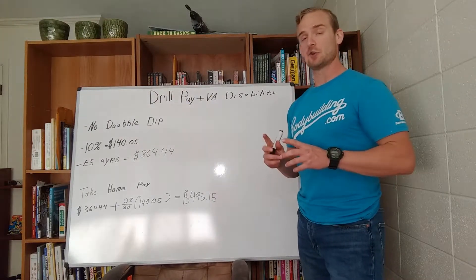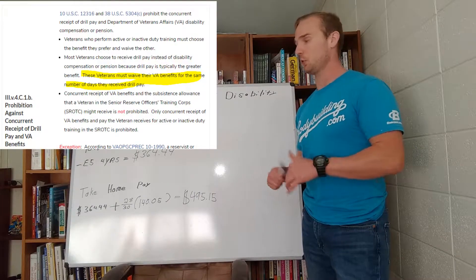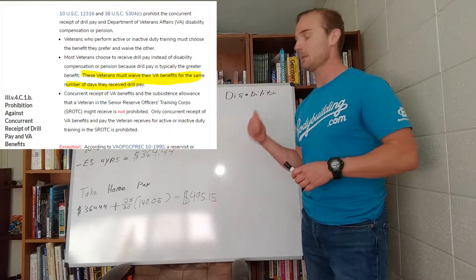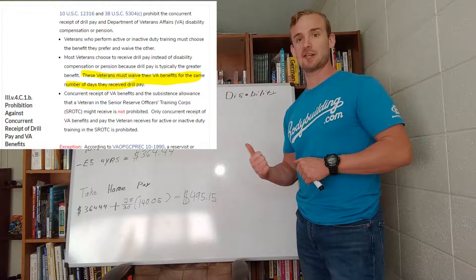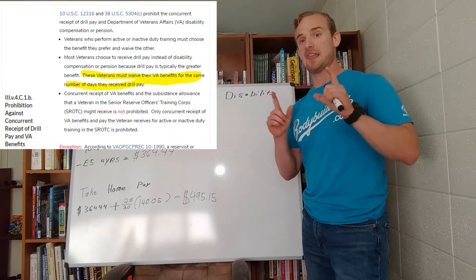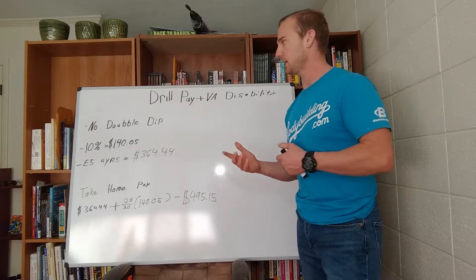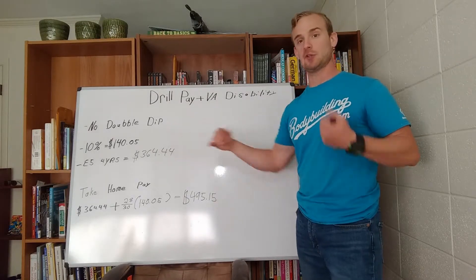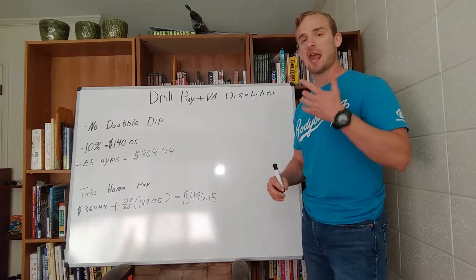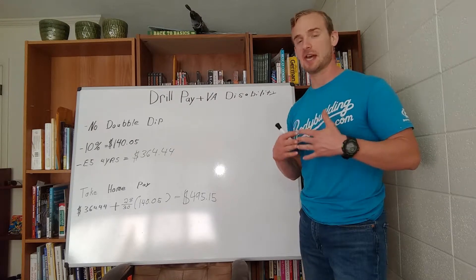First thing, it is true that you cannot double dip. So if you go to a recruiter, they're going to tell you that you can't receive VA disability and your National Guard pay. That's true, but it's true with some qualifications. So you can't double dip, you cannot receive your VA pay and your drill pay at the same time.